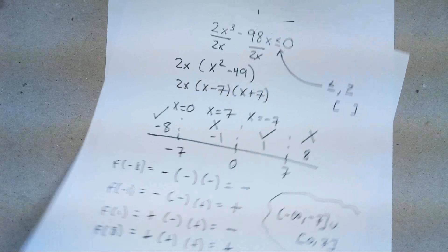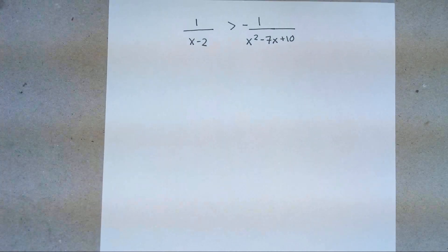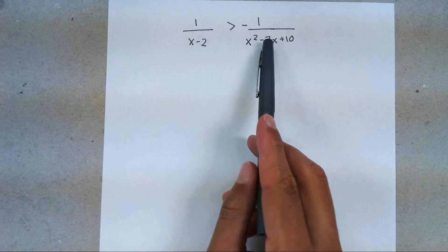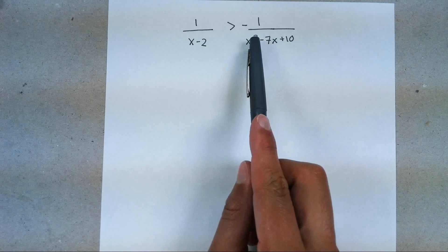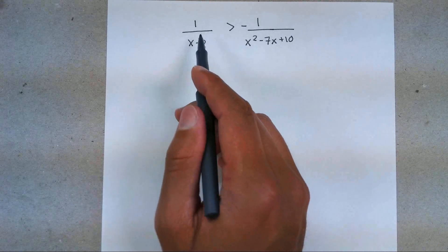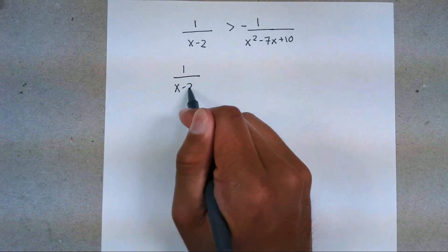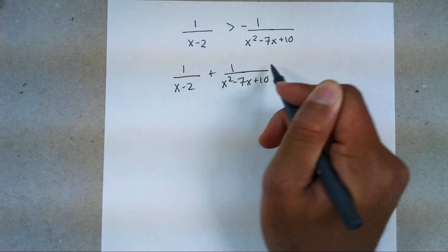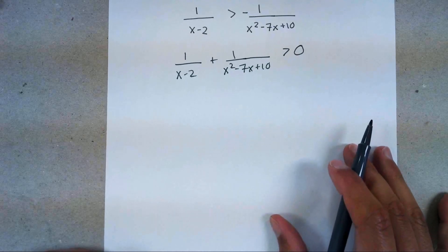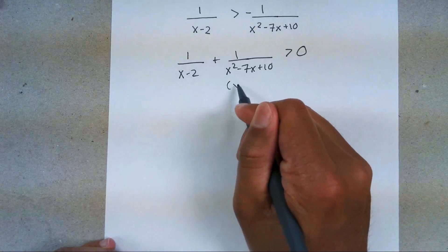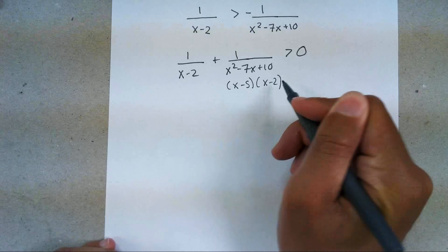Our last one is going to be a rational expression — what happens when you have a fraction? Any time you have a fraction, you need to get an LCD, and the right-hand side always needs to be zero. So first, move everything to the left-hand side. I get (1/(x − 2)) + (1/(x² − 7x + 10)) > 0. Then factor the denominator: x² − 7x + 10 factors to (x − 5)(x − 2).